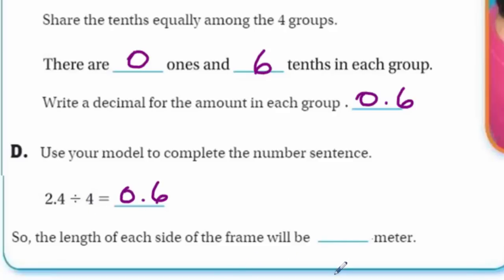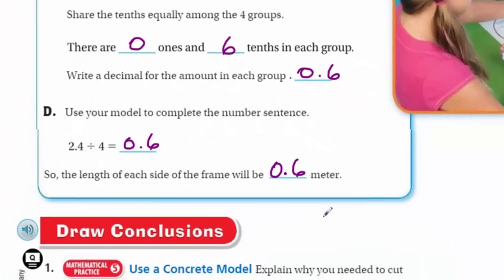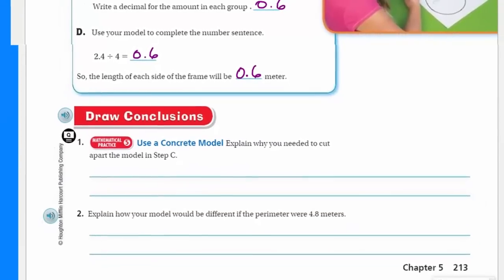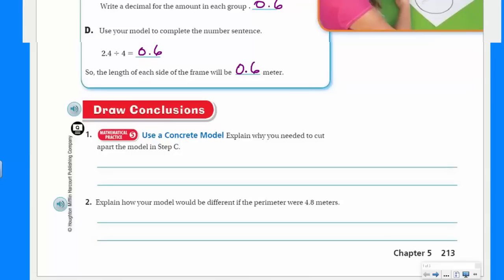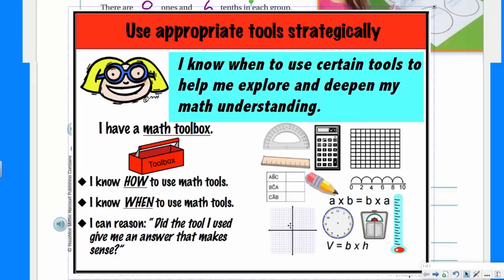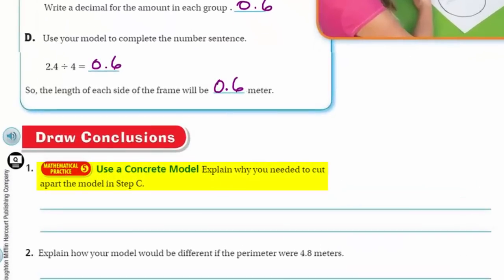So the length of each side of the frame will be 6 tenths meter, because that was the unit of measure used in the problem. Draw conclusions. We're going to take a look at Mathematical Practice 5, which says use appropriate tools strategically. I know when to use certain tools to help me explore and deepen my math understanding — like having a math toolbox and knowing how and when to use them. Now it says: use that concrete model. Explain why you needed to cut apart the model in step C. I couldn't share the two wholes among the four groups equally, but I could regroup and share the 24 tenths.